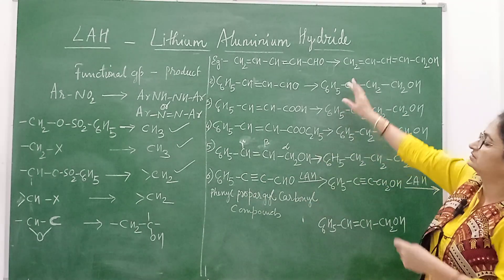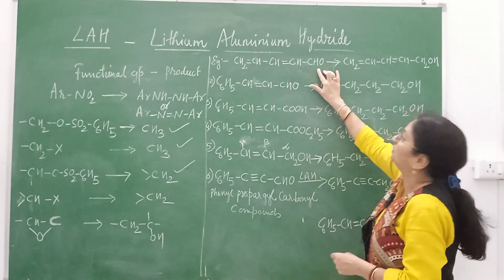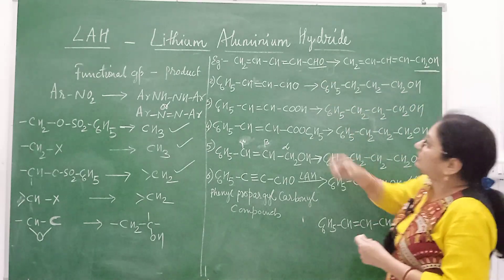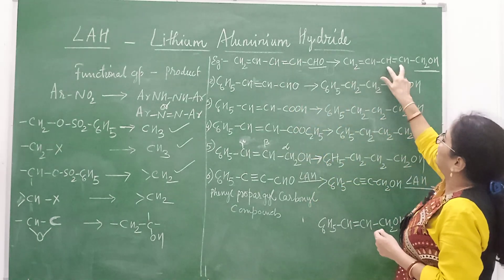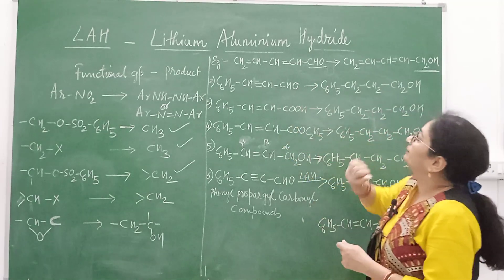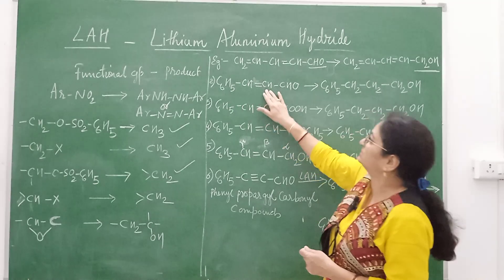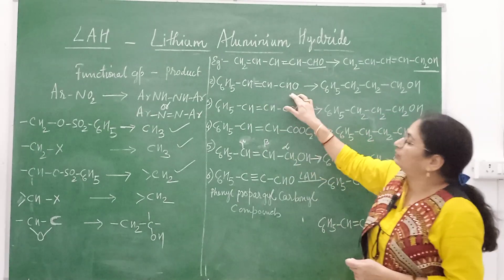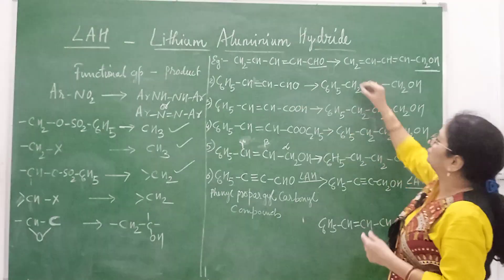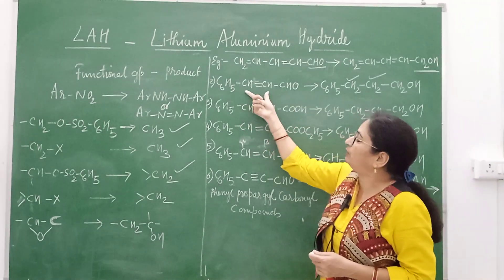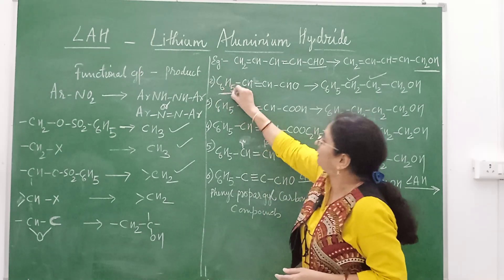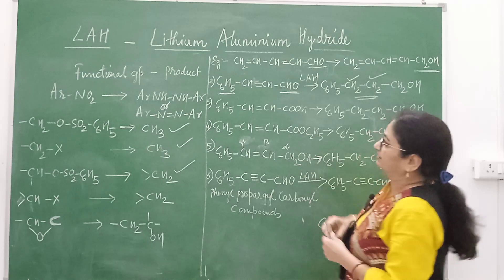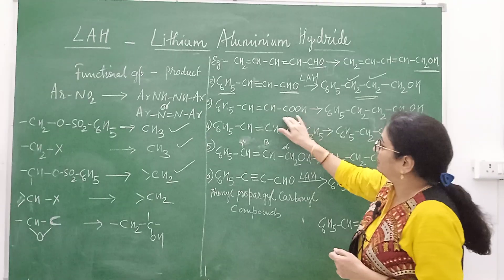Now let's understand the reducing action with examples. In the first example, CH2=CH-CH=CH-CHO: here only the aldehyde group gets reduced to alcohol, whereas the double bonds remain as they are — because no phenyl group is present. In the second example, C6H5-CH=CH-CHO: here the double bond is directly in conjugation with the phenyl group on one side and the carbonyl group on the other side, so this type of double bond gets reduced.